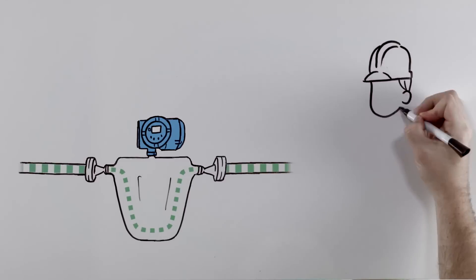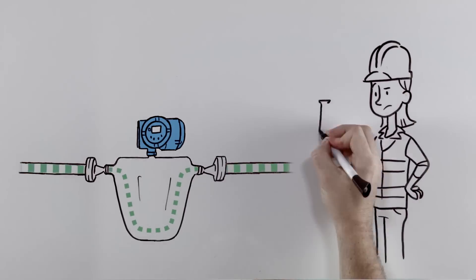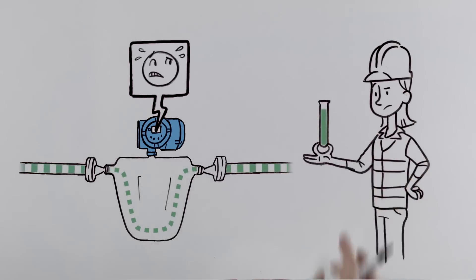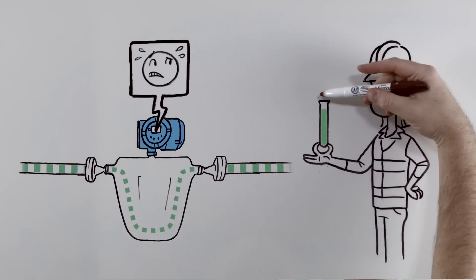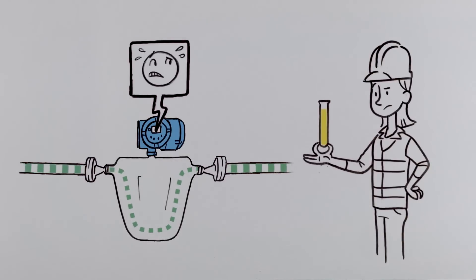Tina's challenge? Whenever an upset or off-spec batch occurs, the process engineers often blame the measurement device, or in Tina's case, the Coriolis flow meter.